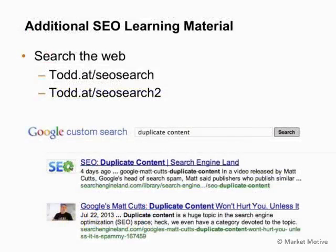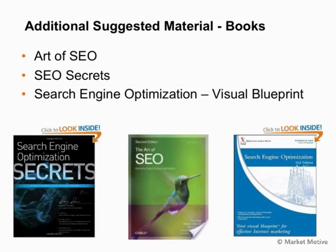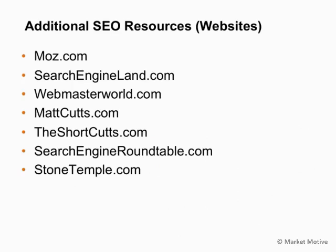So this is a lot to cover. We looked at all kinds of aspects of how a search engine works. If you need to know more or are concerned about any terminology, you can search at custom searches Todd at SEO Search and Todd at SEO Search 2, which give you websites to help answer your questions. For books on the topic, I suggest The Art of SEO, SEO Secrets from Danny Dover, and Search Engine Optimization Visual Blueprint from Chris Jones. Suggested websites include Matt Cutts and others providing valid information on overall SEO.